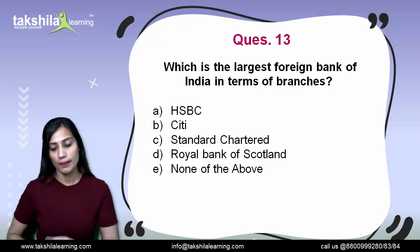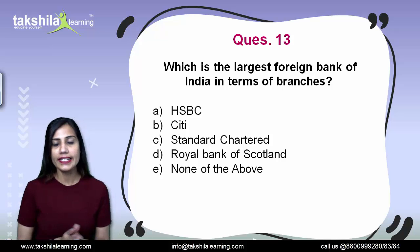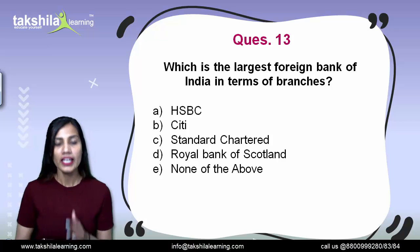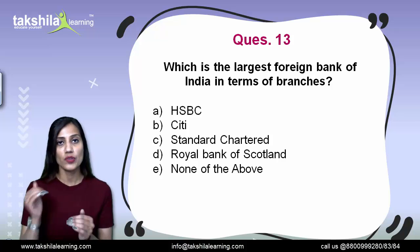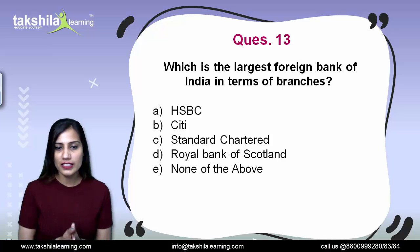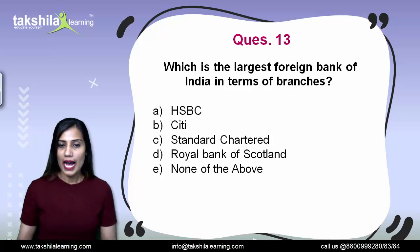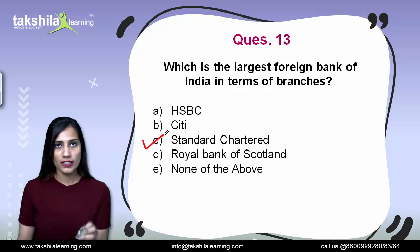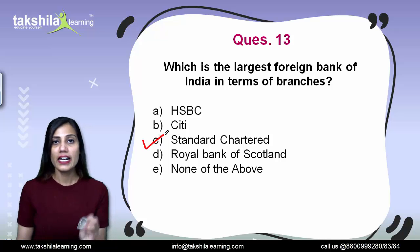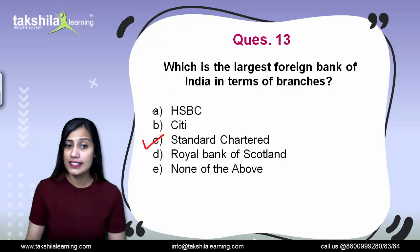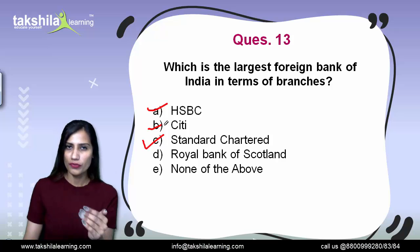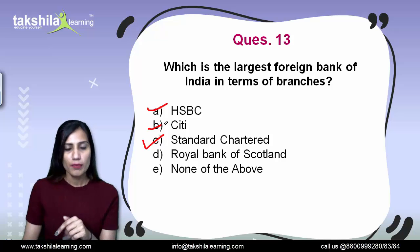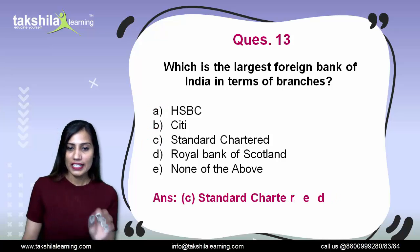Next question: which is the largest foreign bank in India in terms of branches? Note this is about branches, not assets. Options are HSBC, Citi, Standard Chartered, Royal Bank of Scotland, or none of the above. The correct answer is Standard Chartered, which has around 100 branches in India. Second largest is HSBC with around 50 branches, and third is Citi Bank with around 44 branches. Question number 13 correct answer is Standard Chartered.